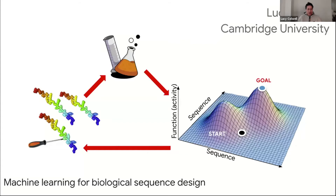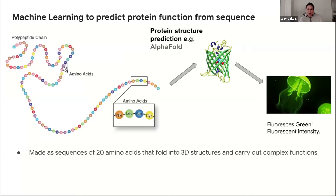I'm excited to talk about machine learning for biological sequence design. This is a nascent field where there's lots of exciting opportunity, and I really encourage people to get involved because there are tons and tons of questions and not that many people working on these problems. I'm really interested in the problem of learning to predict protein function from sequence, and when I say protein function, there are many different things that might mean.